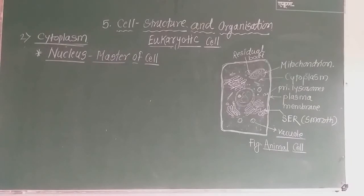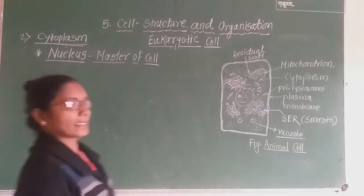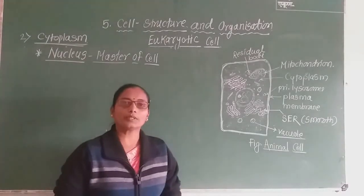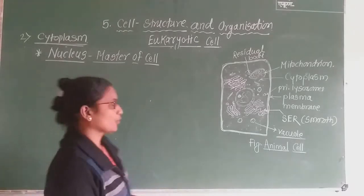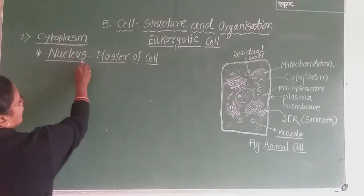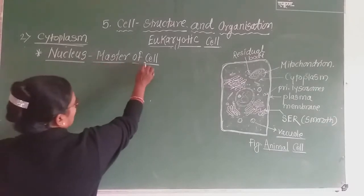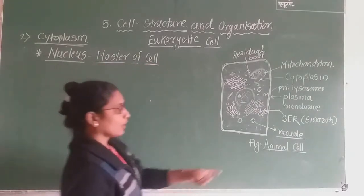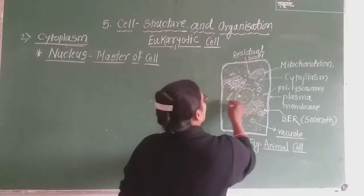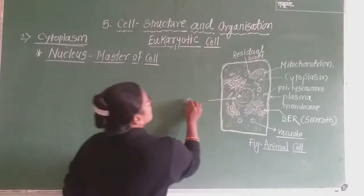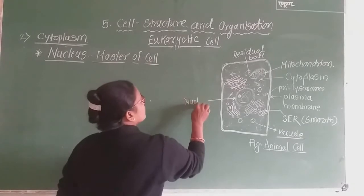Now we are going to study about the most important cell organelle of the eukaryotic cell, that is the nucleus. The nucleus is called as the master of the cell. At the center of the cell, this structure is present, and this structure is called as nucleus.